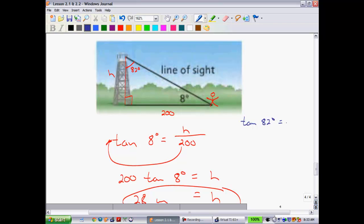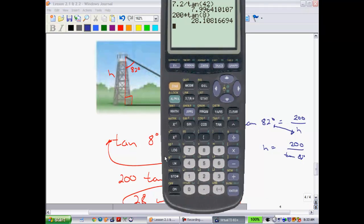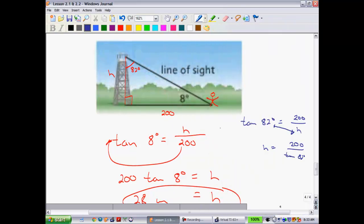This time my opposite would be 200. My adjacent is H. If you recall, when the variable is in the bottom here, we're going to swap these two. So we have H is equal to 200 divided by the tangent of 82. And check what happens here. So 200 divided by the tangent of 82 is equal to the exact same thing.